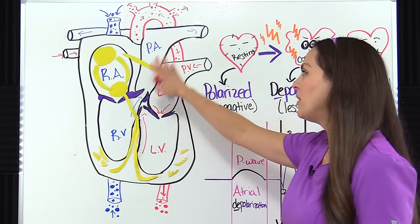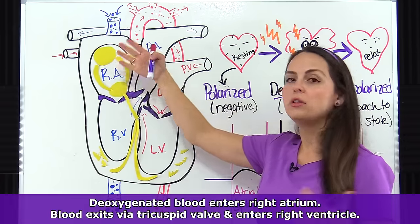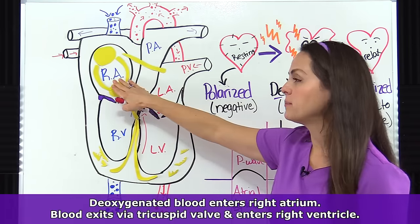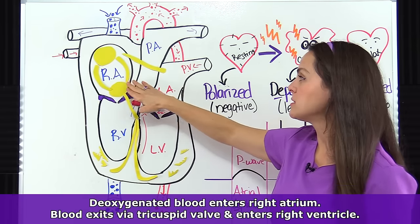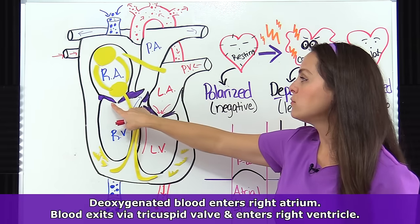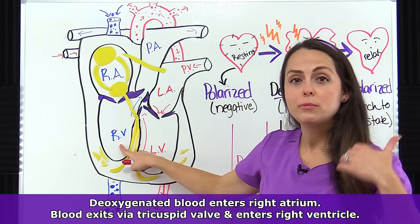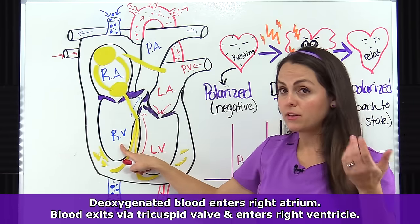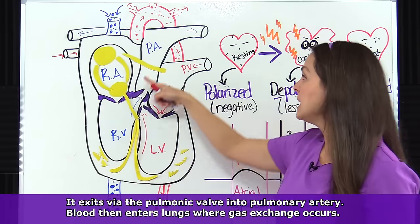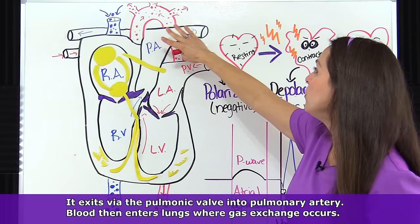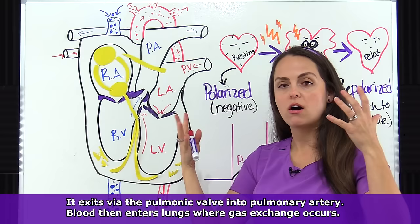First, let's look at the heart blood flow. Everything starts on the right side of the heart. Blood that needs to be replenished with oxygen will enter into the right atrium. When the right atrium becomes full, it will be stimulated by the electrical conduction system, causing it to contract and send blood down through the tricuspid valve into the right ventricle. The right ventricle will then contract and send blood up through the pulmonic valve into the pulmonary artery, where gas exchange occurs and the blood gets oxygenated again.